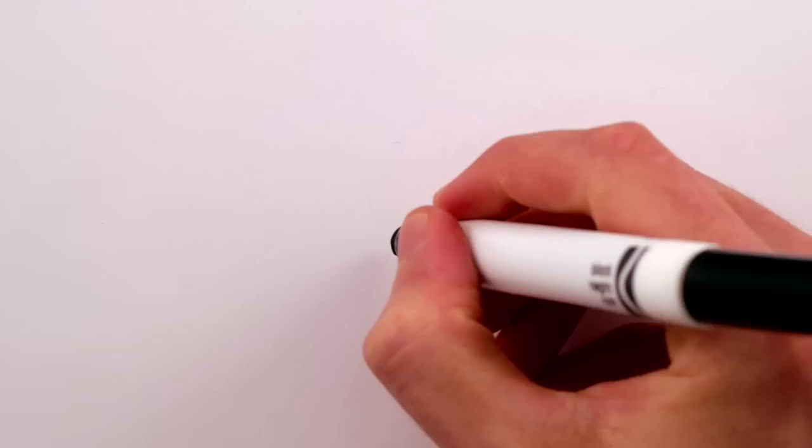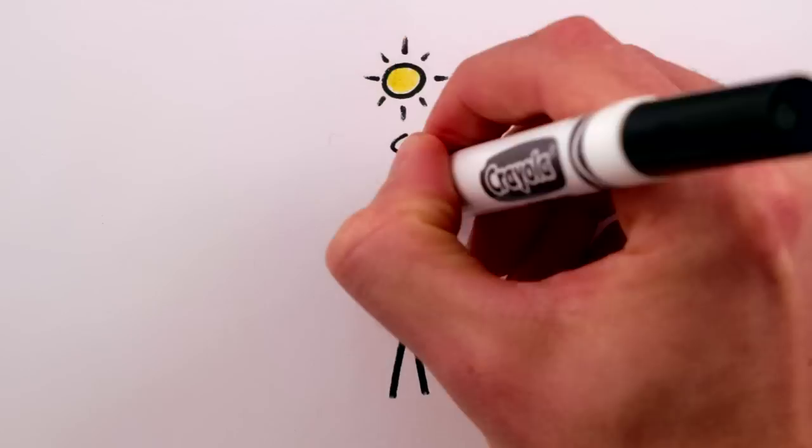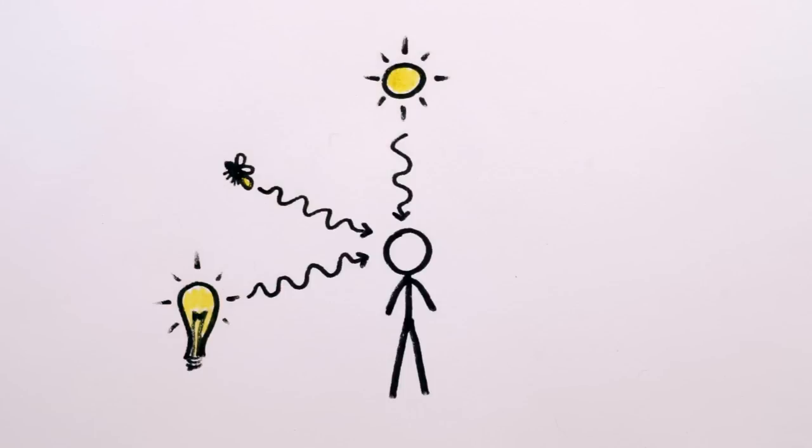In order for us to see something, it either needs to emit light directly, like the sun or a lightbulb filament or firefly, or else have photons of light bounce off of it and into our eyes.